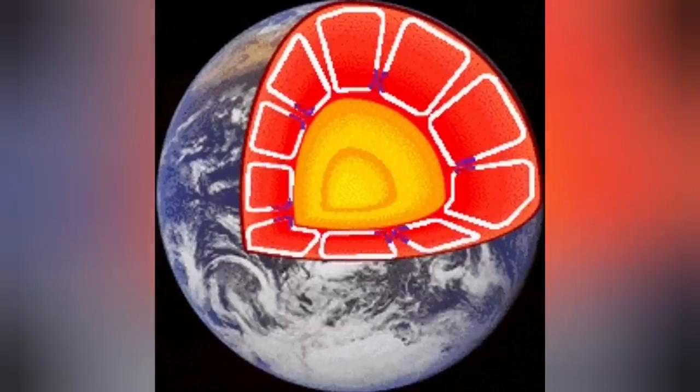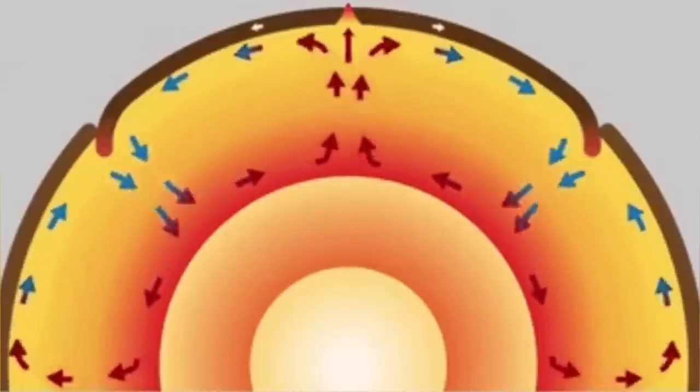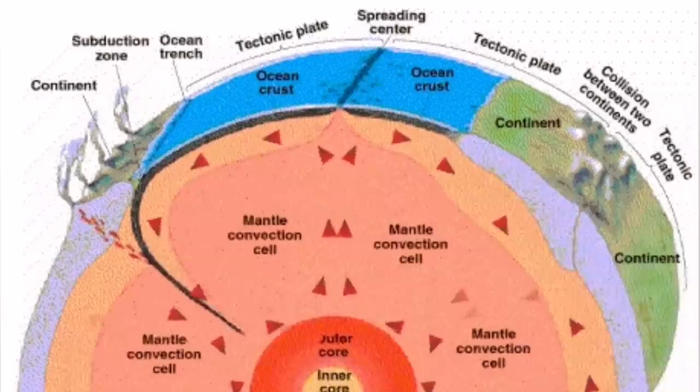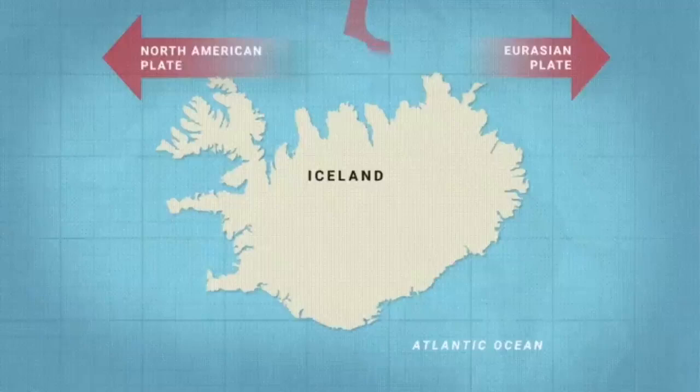This heat creates convection cells through the mantle of the Earth, which rises to the surface and cracks the hardened solidified crust of the Earth, we call it lithosphere. And through these cracks, magma can erupt.